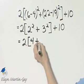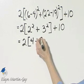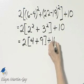2 squared is 4 plus 3 squared. That's 3 times 3, that's 9, then plus 10.